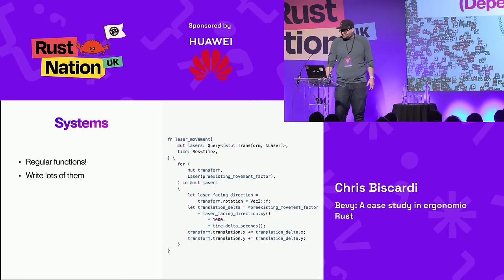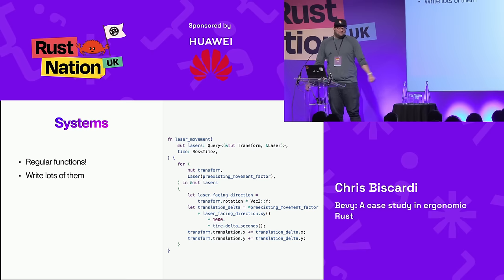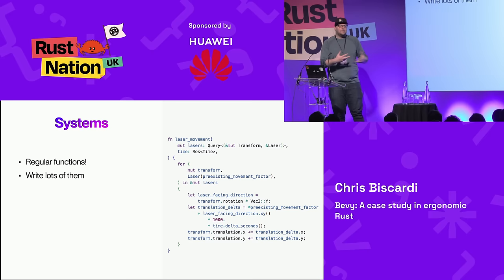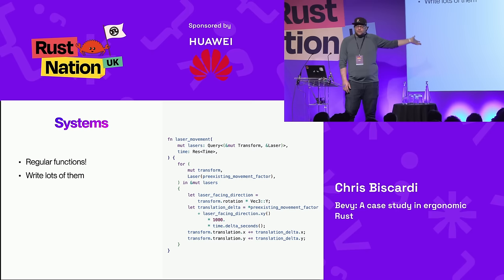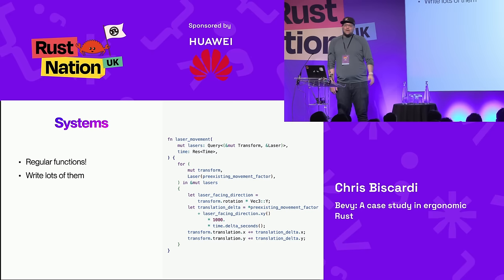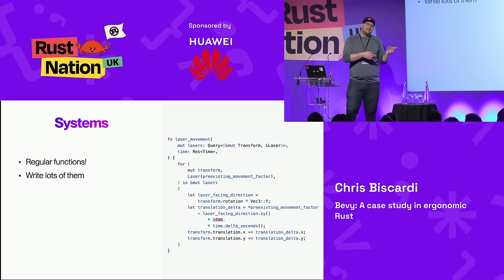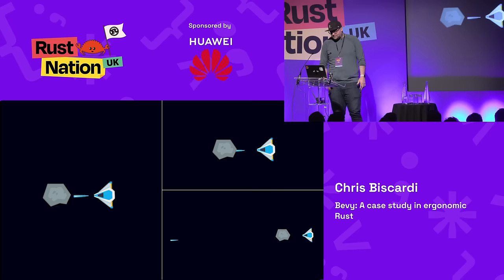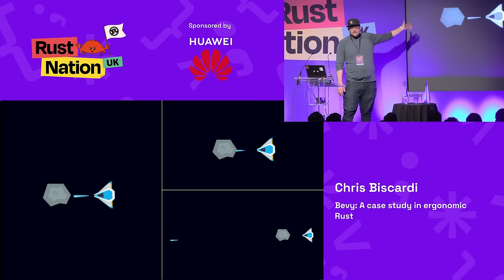The fact that we can use regular functions as systems is a really important ergonomic choice for Bevy, because we write a lot of them — that's how all the logic is written. Here we've got `laser_movement`, another system that queries for all entities with both a transform and a laser component. We also get time, because deciding how far a laser moves should be tied to elapsed time, not frame rate — otherwise the kid with the 4090 is going to be moving a lot faster.